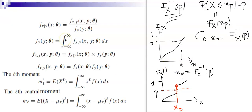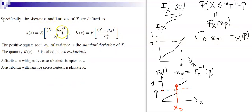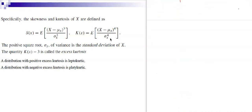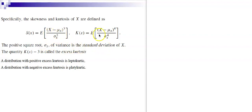In finance we study two additional quantities beyond the variance: the skewness S(X) and the kurtosis K(X). Skewness is the third central moment divided by σ_X cubed, and kurtosis is the fourth central moment divided by σ_X to the power four, where σ_X is the standard deviation — the positive square root of the variance σ²_X.